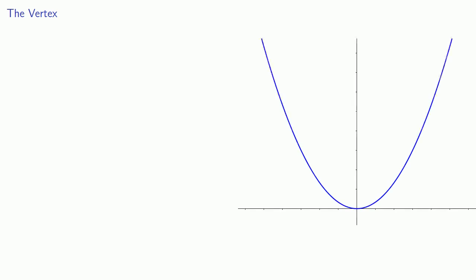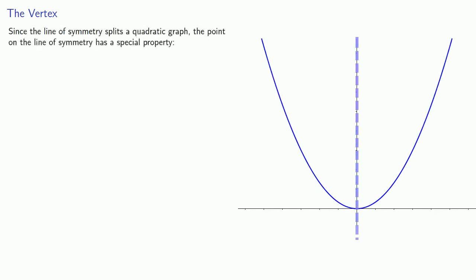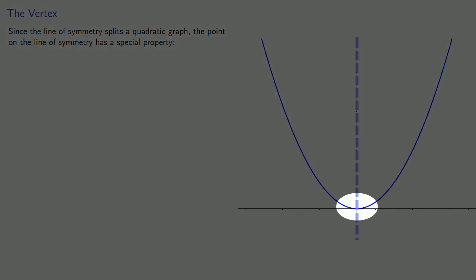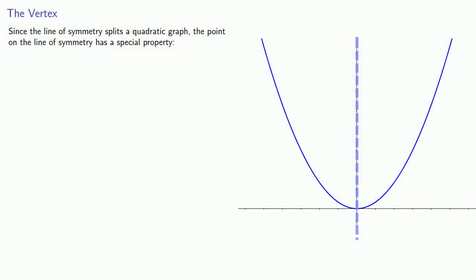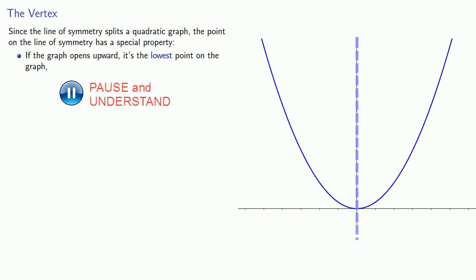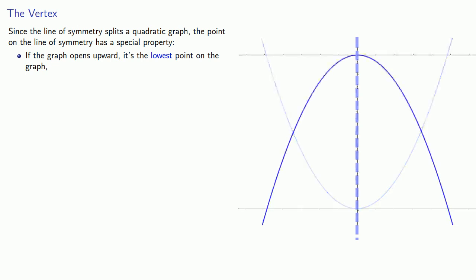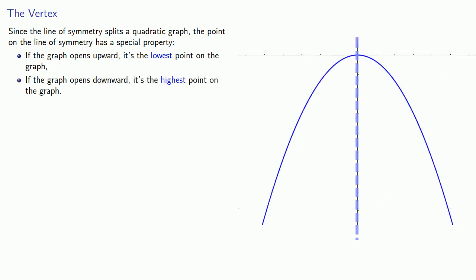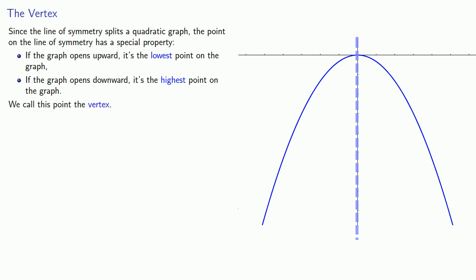This allows us to introduce an important point. Since the line of symmetry splits a quadratic graph, the point on the line of symmetry has a special property. If the graph opens upward, this point is the lowest point on the graph. On the other hand, if the graph opens downward, this point is the highest point on the graph. We call this point the vertex.